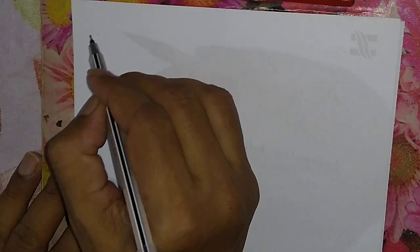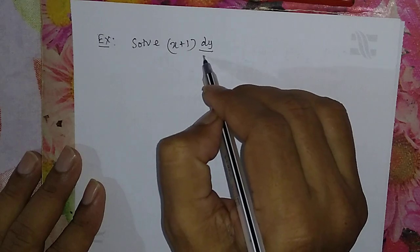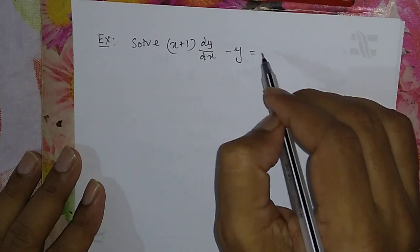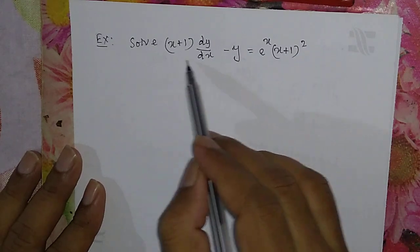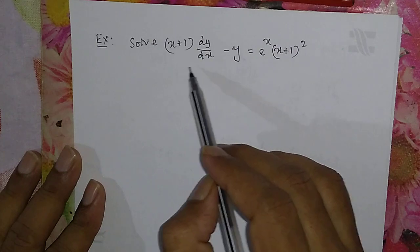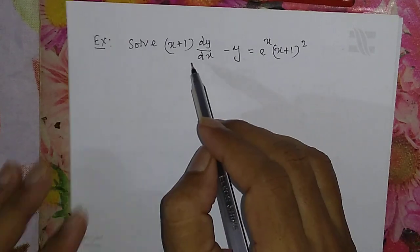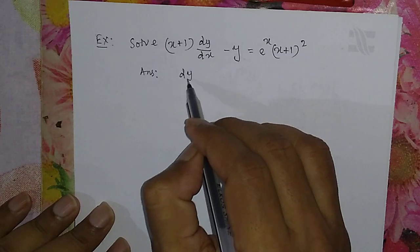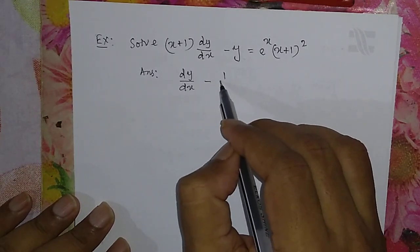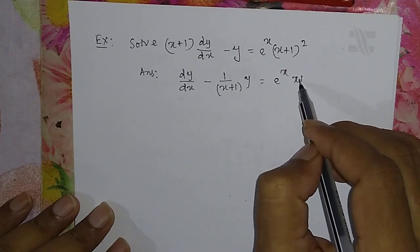Now let us solve an example. The problem is: solve (x+1)·dy/dx minus y equals e^x·(x+1)². Dividing throughout by (x+1), we get dy/dx minus 1/(x+1)·y equals e^x·(x+1). This is now in the standard linear form dy/dx plus P·y equals Q.